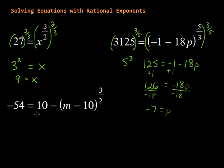So let's get rid of this 10, and to do that, we'll subtract 10 on both sides. There we go. Negative 54 minus 10 gets us negative 64, and that's equal to, let's see what's left over here. Don't lose that negative. That's really important. So negative, and then we've got m minus 10 to the 3 halves power.